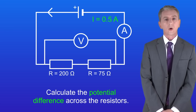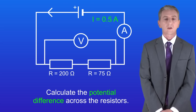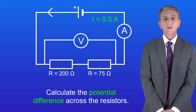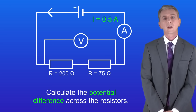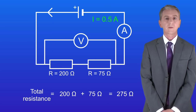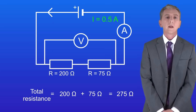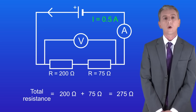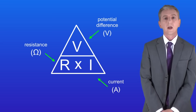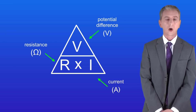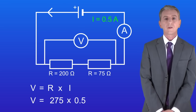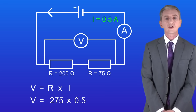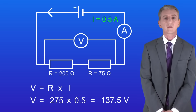Here's another question for you — calculate the potential difference across the resistors. Pause the video and try this yourself. First we've got to calculate the total resistance: 200 ohms plus 75 ohms gives a total resistance of 275 ohms. Now to calculate the potential difference we use the equation: potential difference equals resistance multiplied by current. 275 multiplied by 0.5 gives a potential difference of 137.5 volts.